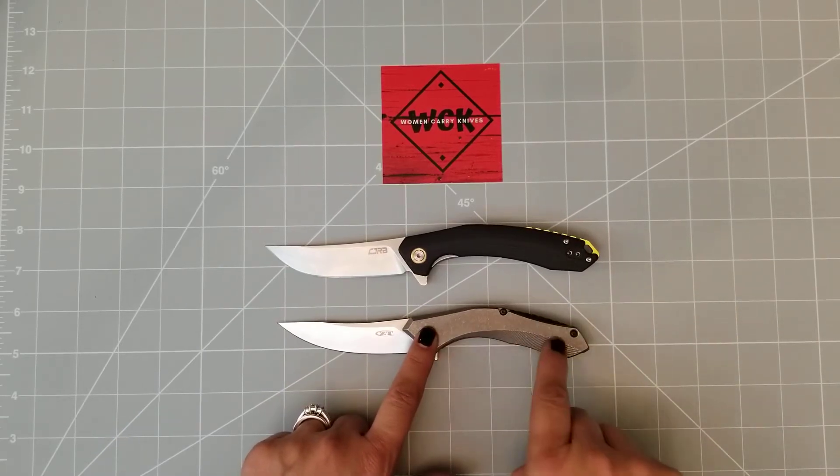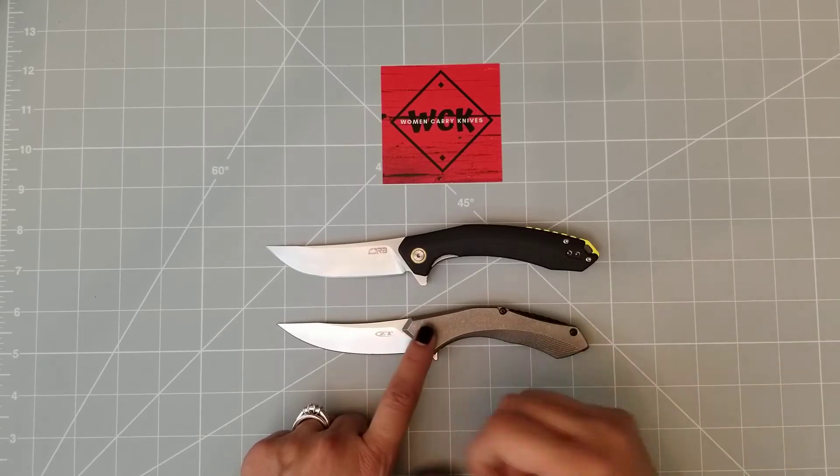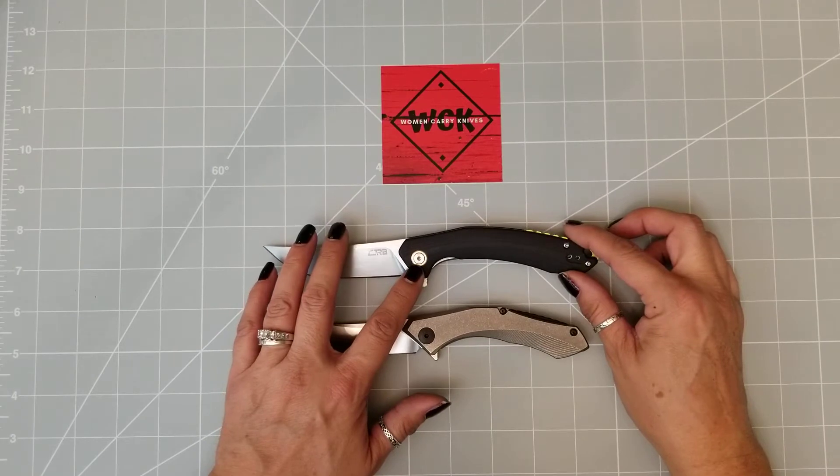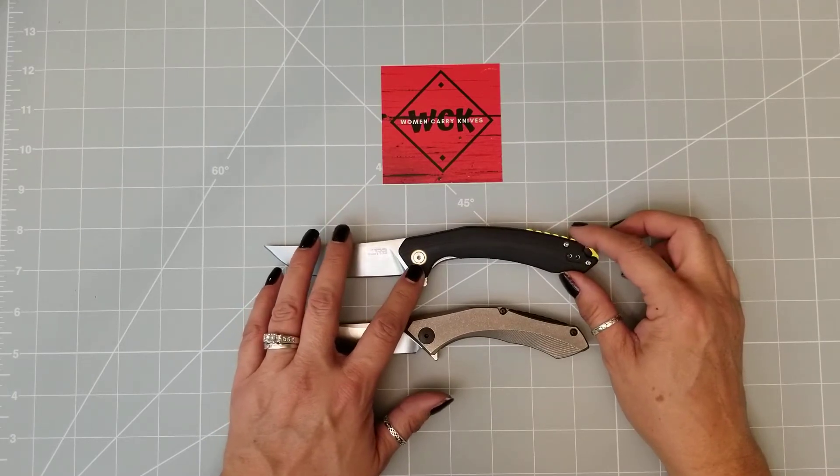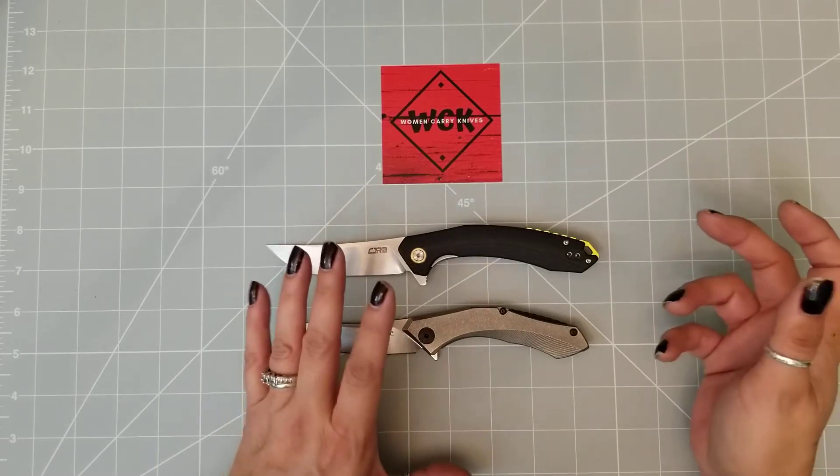The handle on the ZT, in my opinion, is a lot more defined or almost harsh would be a good word, whereas the CJRB is not. It is a lot smoother. It has a different angle to it. It has a different end to it.